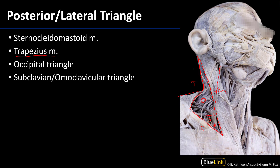In the occipital triangle there are cutaneous afferents — these are branches coming from the nerve point of the neck that originate from there. The accessory nerve is also going to traverse this space.